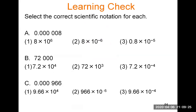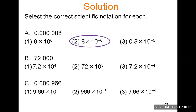For 0.00008, move the decimal point to the right: 1, 2, 3, 4, 5 times — wait, let's recount: 1, 2, 3, 4, 5, 6 times until we reach the 8. The exponent is 6. Since we started with a small number, the exponent is negative. The correct answer is 8 × 10⁻⁶.